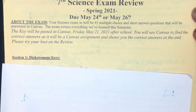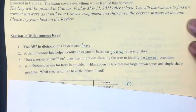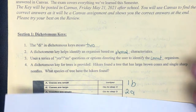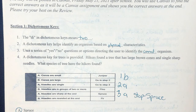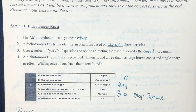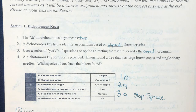Section one is over dichotomous keys. Questions one through four are on the board. The word dichotomous means two. A dichotomous key helps identify an organism based on physical characteristics — how it looks on the outside. A dichotomous key uses a series of yes or no questions or options directing the user to identify the correct organism.